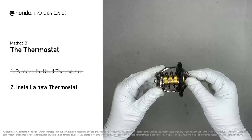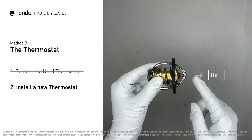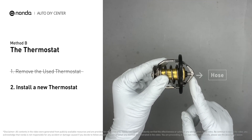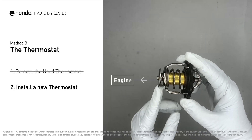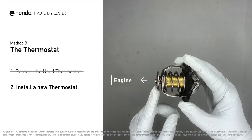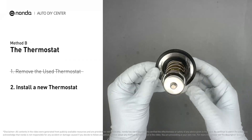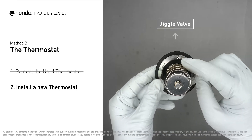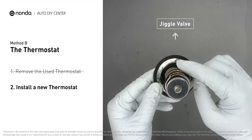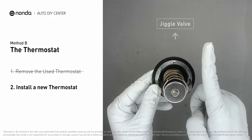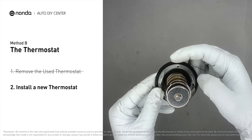To install it correctly, you need to make sure the short end goes toward the hose, and the deep end goes toward the engine. When you install it back to the engine, make sure the jiggle valve is pointed straight up to the top of the engine, so the air can get through the system.